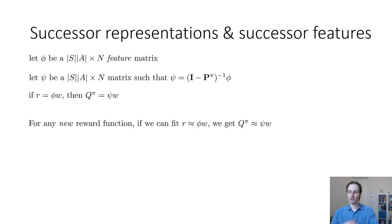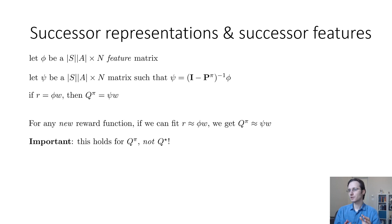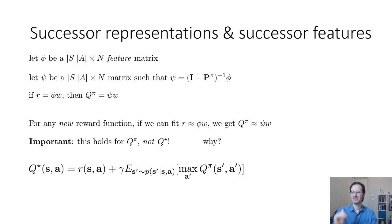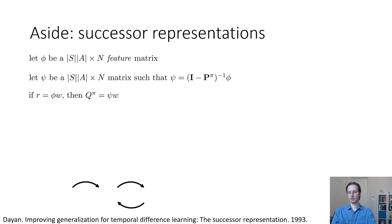The way we could use this is: when transferring to a target domain with a different reward, if we can fit the new reward as a linear combination of the columns in φ — basically estimate R as φ w — then we can immediately get Q^π as ψ w. Importantly, this holds for Q^π, not Q*. This does not give us the optimal Q function, because the equation for Q* contains a max rather than an expected value, and once you have the max, this is no longer a linear equation.